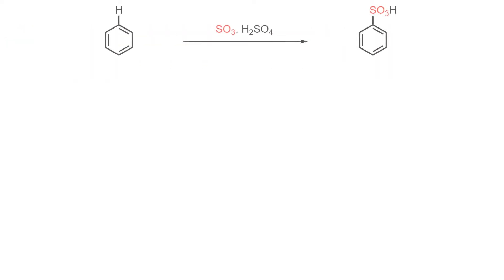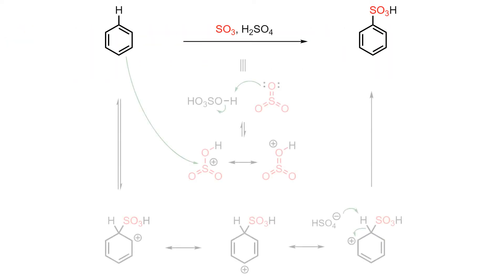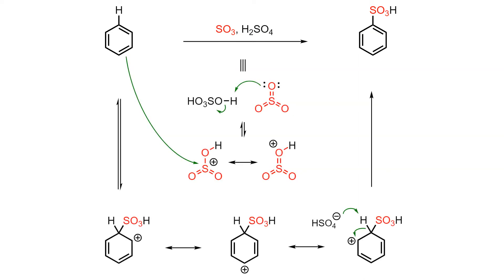Although benzene is quite a stable molecule, it may be induced into reaction in the presence of powerful electrophiles. In this case, SO₃ is treated with concentrated sulfuric acid to give a protonated electrophile that is potent enough to make benzene attack.